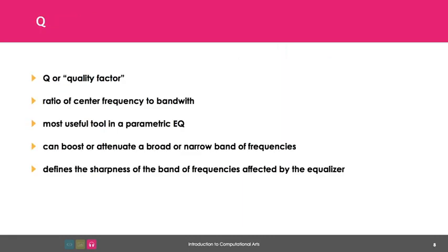Instead of bandwidth, most effects use the Quality Factor, or Q, which is the ratio of center frequency to bandwidth. Q is by far the most useful tool a parametric EQ offers, allowing you to attenuate or boost a very narrow or wide range of frequencies within each Q band.